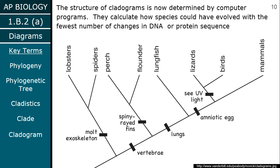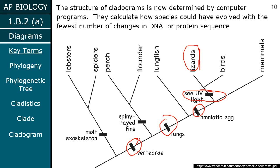We can figure out what traits an organism has by looking at the traits on the tree. If I want to know what traits a lizard has, I look at the lizards and work backwards. I see they can see UV light. Looking back toward the beginning, they also have amniotic eggs, lungs, and vertebrae. All of these things, going from root to tip, would describe the lizards.